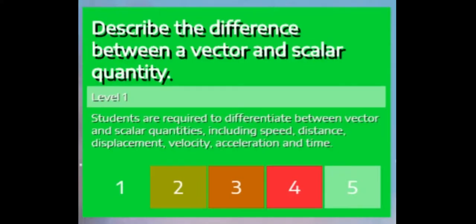So for example, in vectors and scalars you need to be able to describe the difference between a vector and a scalar quantity. Level one means it's pretty simple, and it's something that you should be able to learn quite easily.